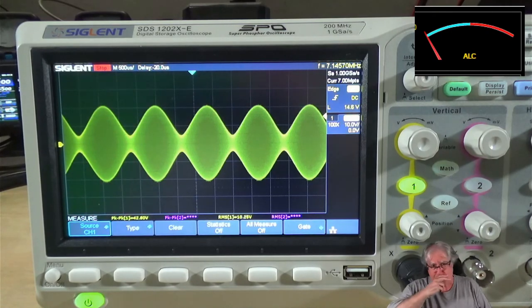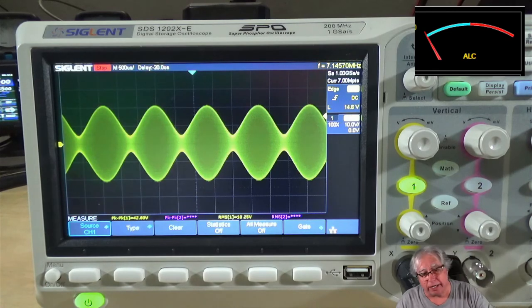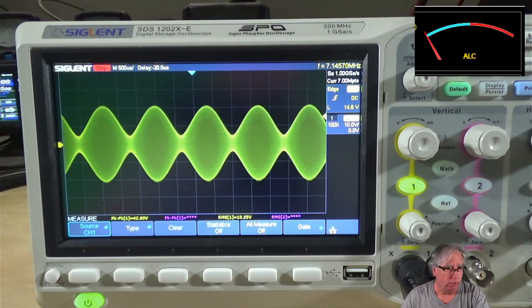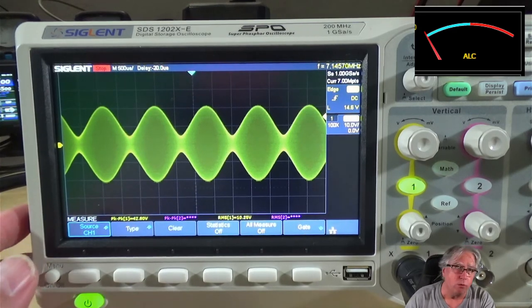Now if it's still distorted and your ALC is not kicking in, that's when you're probably going to want to put it on a scope and see what it actually looks like, because there could be something wrong with your radio and this would be the next place to look.